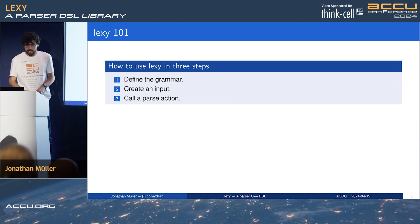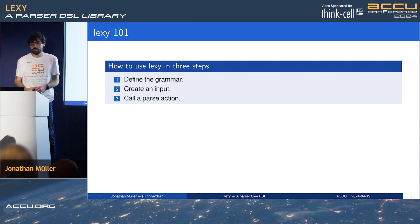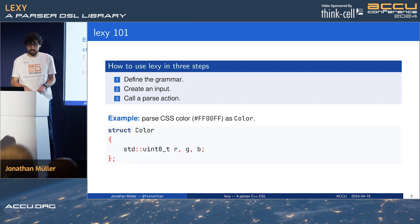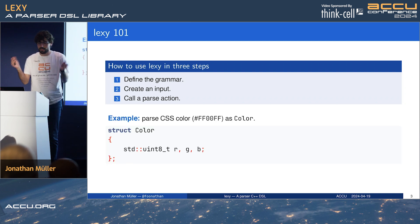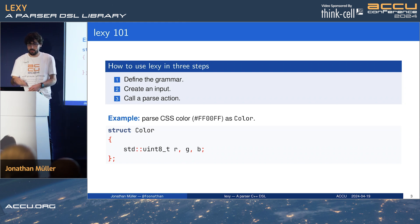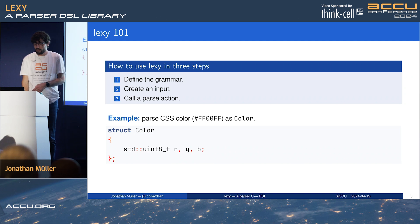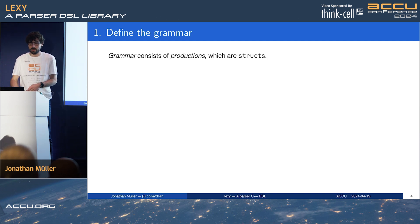To use Lexi you need three things: first, define the grammar; then create the input; and then call a parse action. For example, let's say we want to parse a CSS color into a struct — so like a hash and then the color value — and then we parse that into struct RGB.